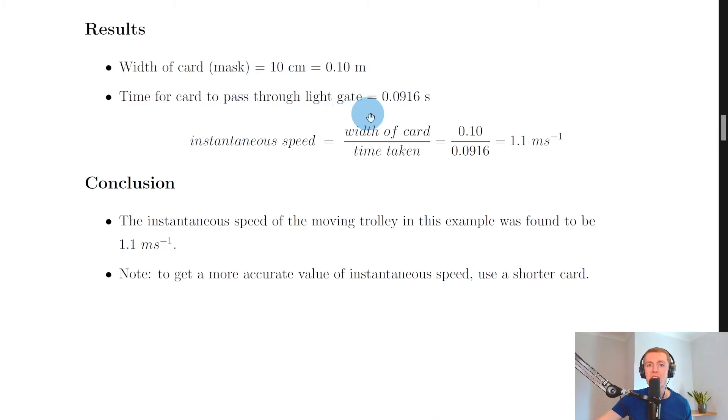The time for the card to pass through the light gate was found to be 0.0916 seconds, so a very short time. Plugging that into instantaneous speed equals width of card divided by time taken, we get 0.10 over 0.0916, which should give you an answer of 1.1 meters per second.